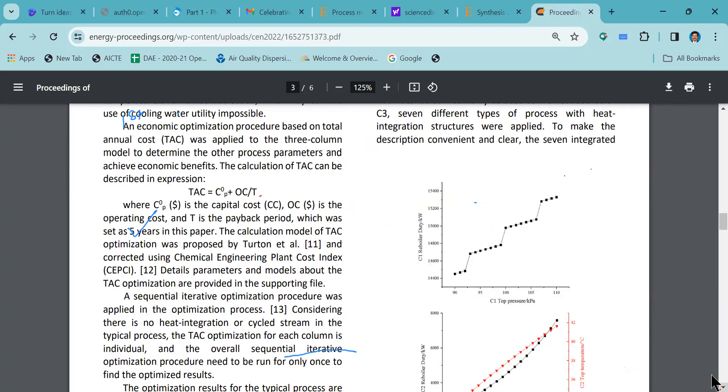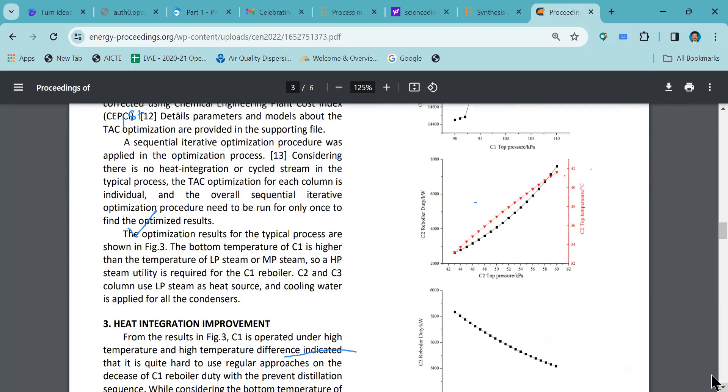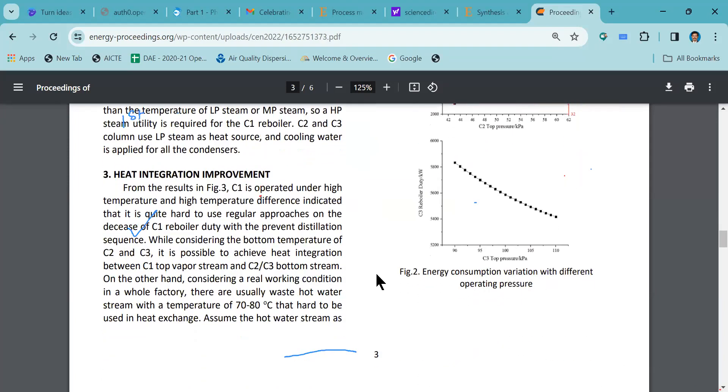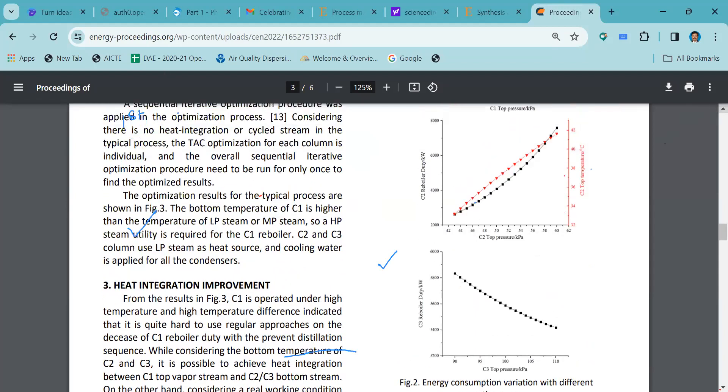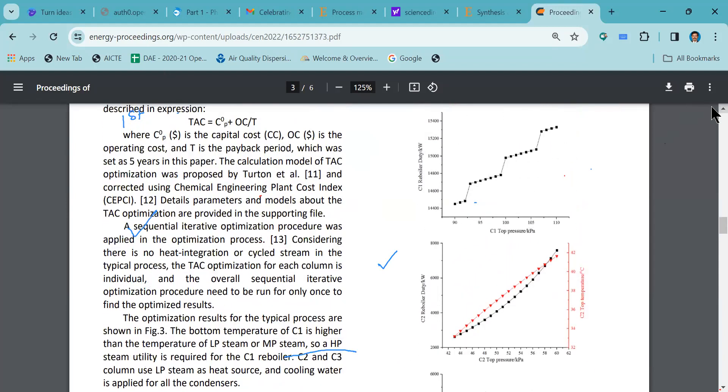Let's go to the second diagram. This is another diagram where they are trying to show energy consumption variation with different operating pressures. You can see how the energy consumption is related. Then we will be able to understand how they have produced the results. That means at each and every point, how their data has been obtained.